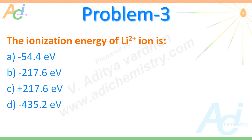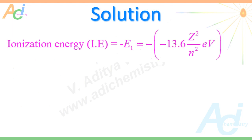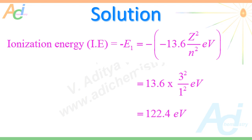The third problem: the ionization energy of Li²⁺ ion is — with a few options given. We know that ionization energy is the negative of the energy of the first orbit. For the first orbit, N = 1, and for lithium, Z = 3. Therefore the ionization energy is 122.4 eV — it is positive because it is the negative of a negative value.